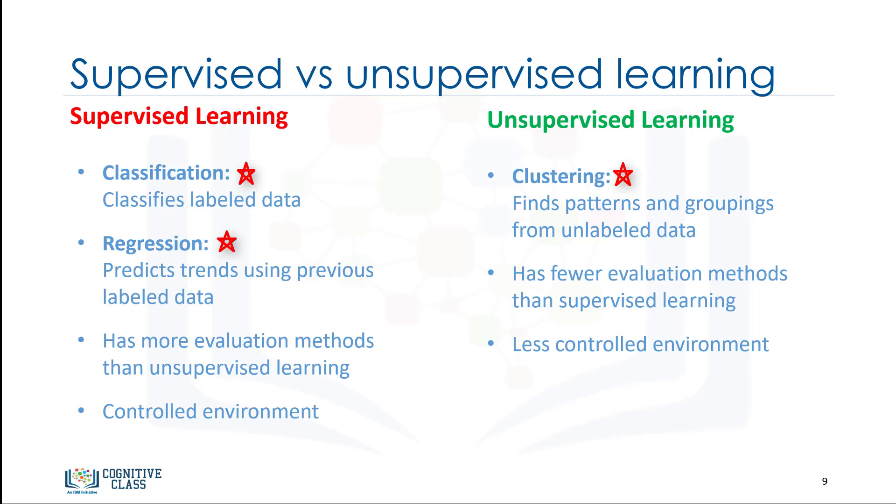In comparison to supervised learning, unsupervised learning has fewer models and fewer evaluation methods that can be used to ensure that the outcome of the model is accurate. As such, unsupervised learning creates a less controllable environment as the machine is creating outcomes for us. Thank you.